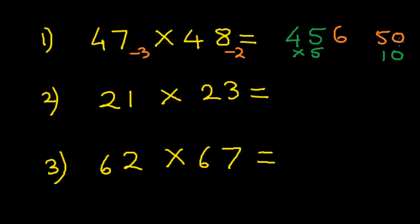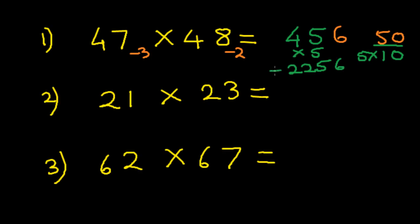50 is 5 × 10, that is 5 times 10. So when we multiply 45 by 5 and append 6, we get 2256. That's the answer.